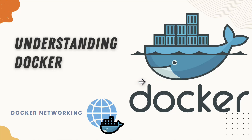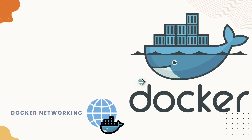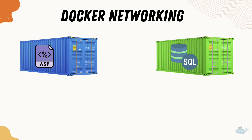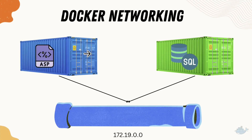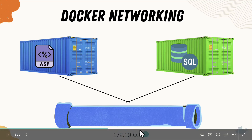In this lecture we'll be seeing how we can make practical use of the Docker networking concept from our last lecture. The basic idea is we are going to have two containers — one running an application built in ASP.NET, and another running the SQL Server database. We need to communicate between these two containers using a network we have created.